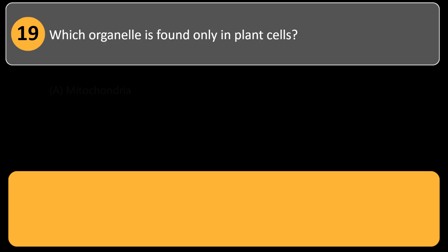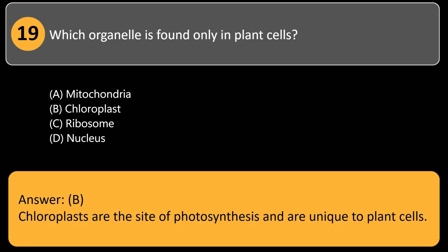Which organelle is found only in plant cells? A. Mitochondria, B. Chloroplast, C. Ribosome, D. Nucleus. Answer: B. Chloroplasts are the site of photosynthesis and are unique to plant cells.